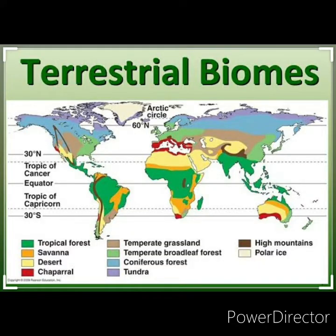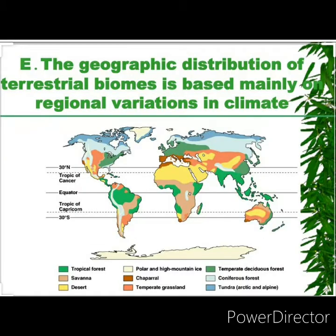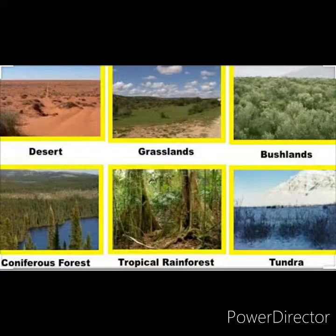Terrestrial biomass is a group of living organisms that live and interact with one another on land. They are mainly determined by temperature and rainfall. Some of the major terrestrial biomass in the world are tropical forest biomass, tropical savannah biomass, desert biomass, temperate grassland biomass and tundra biomass.